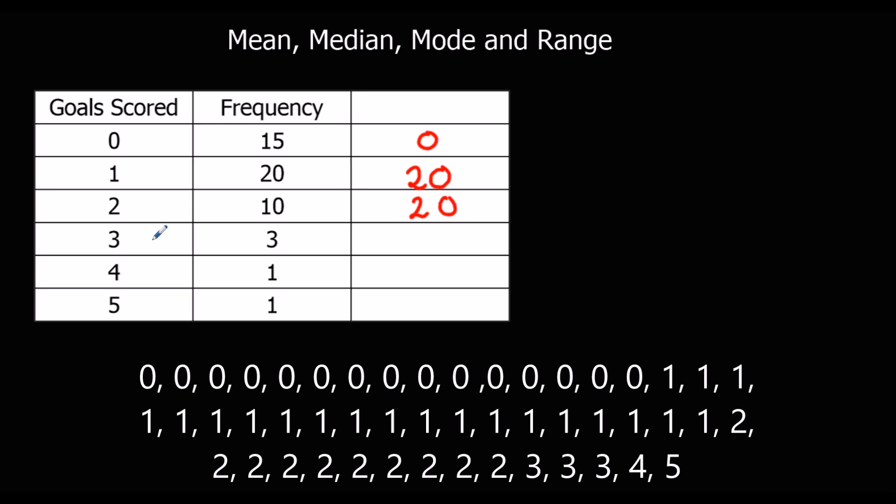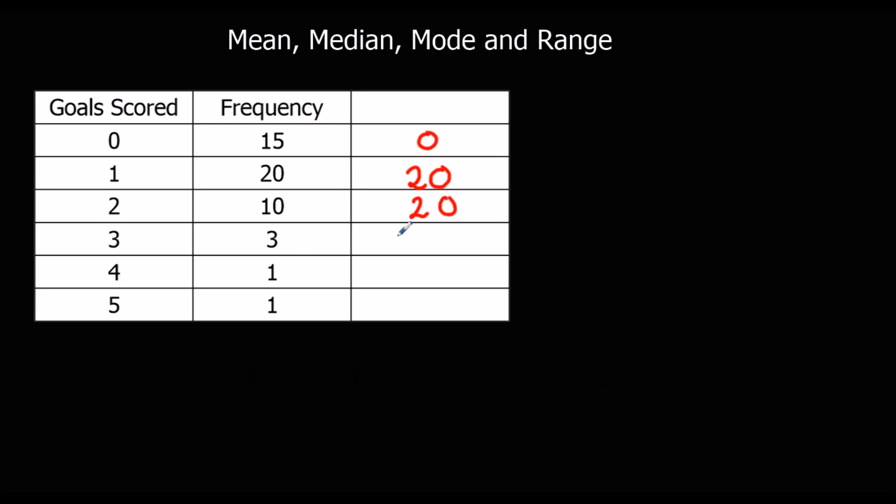There's 3, 3 times. So 3 plus 3 plus 3, or 3 threes. That's 9. There's only 1 four. So that's 4. And there's 1 five. And that's 5.